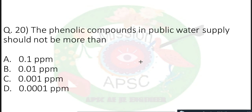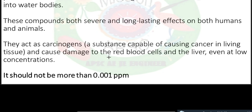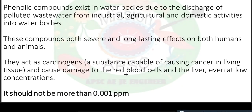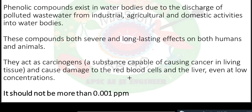Question number 20: The phenolic compounds in public water supply should not exceed — what limit? Phenolic compounds exist in water bodies due to discharge of polluted wastewater from industrial and domestic activities. These compounds have long-lasting harmful effects on both humans and animals; they act as carcinogenic substances capable of causing cancer, and cause damage to red blood cells and the liver even at low concentration. The limit of phenolic compounds should not be more than 0.001 ppm (parts per million, i.e., milligrams per liter). So option C is the correct answer.